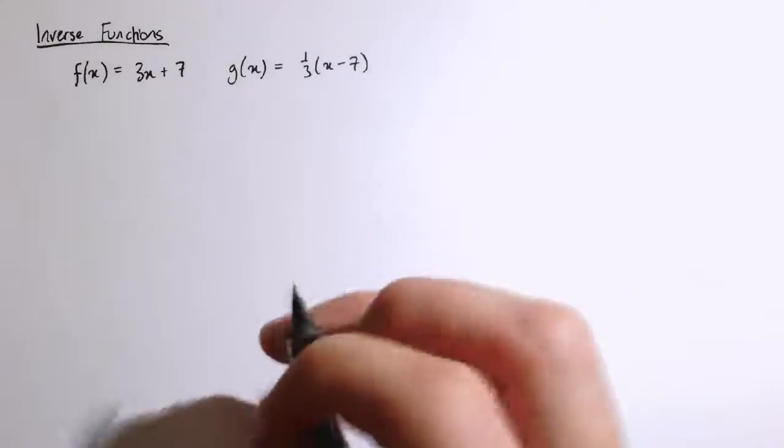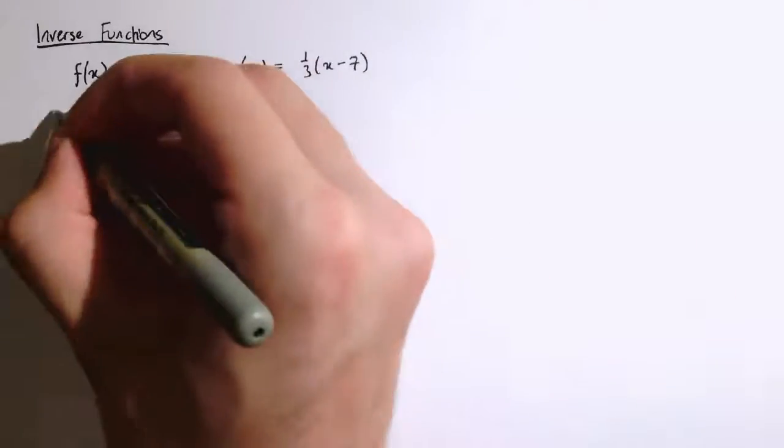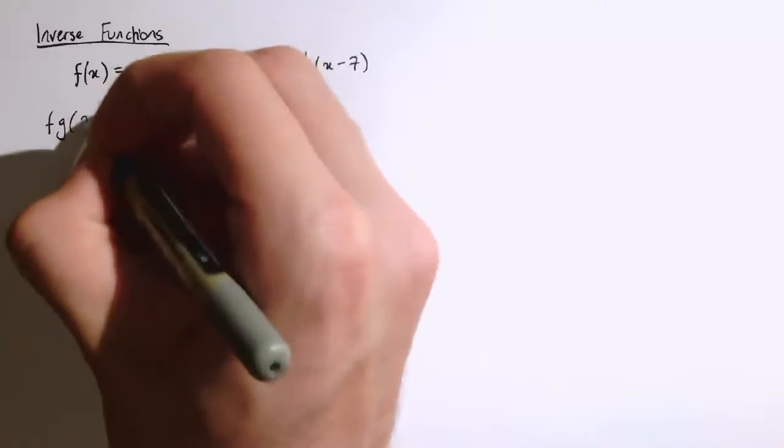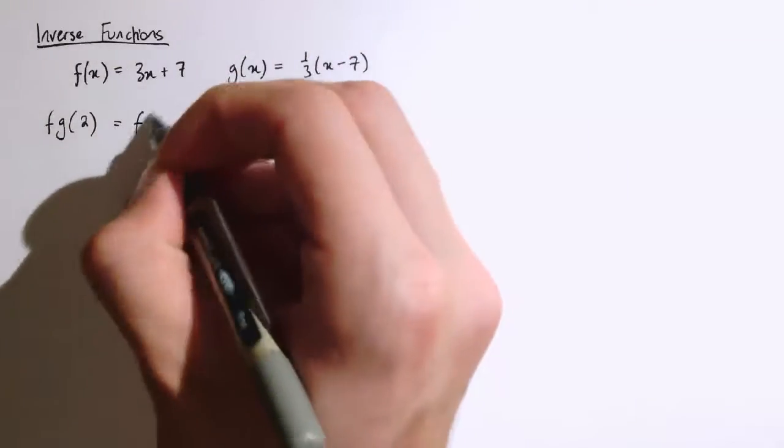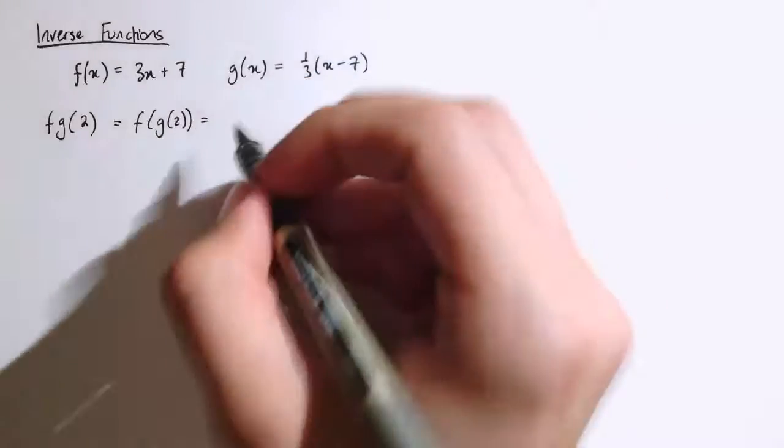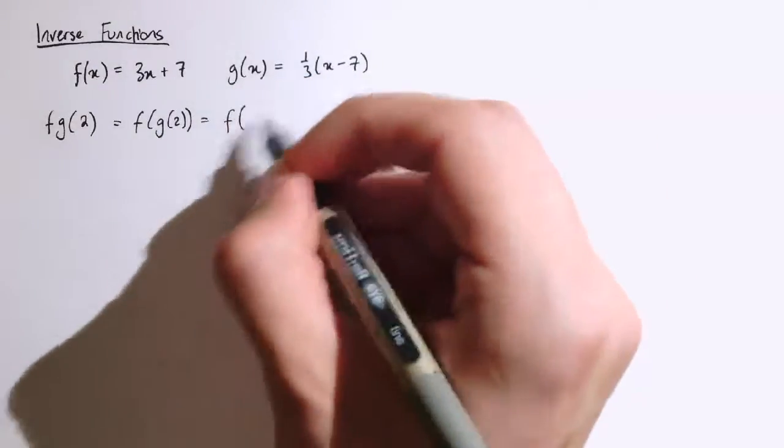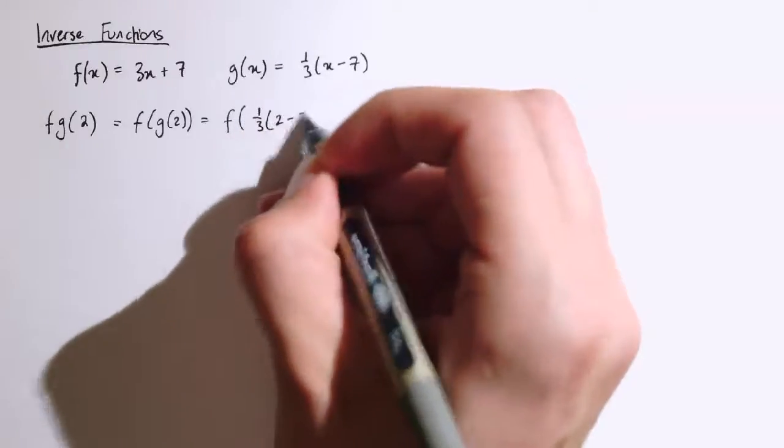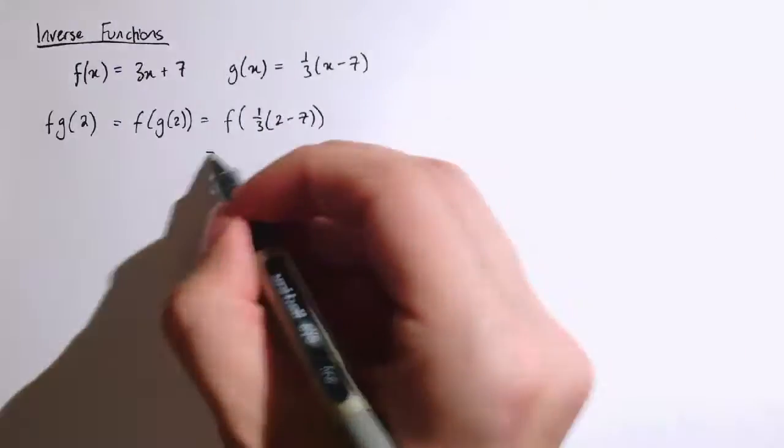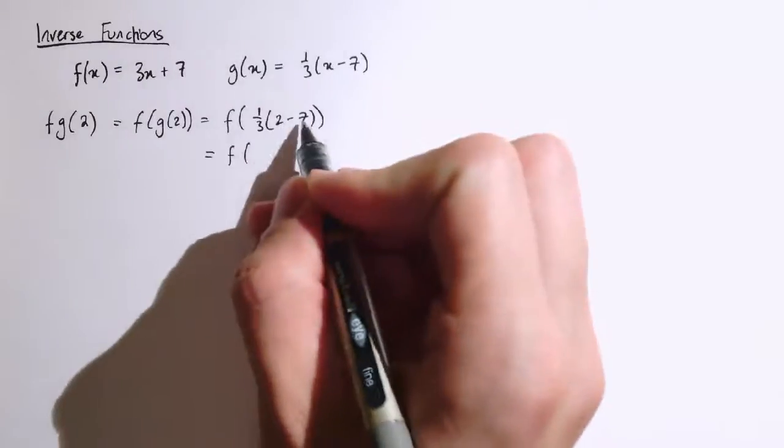Let's just see what happens when I work out the composition for some values. So let's say if I did f, g of 2, so that means do f to g of 2. So I'm going to do g of 2 first, so that's 1 third of 2 minus 7, so that's 2 minus 7 is minus 5.